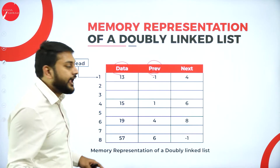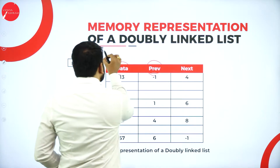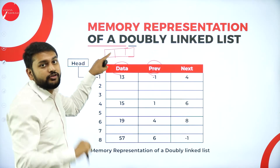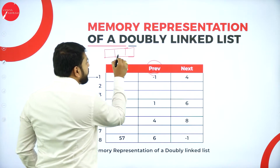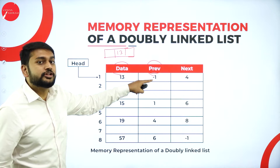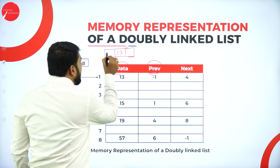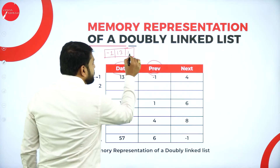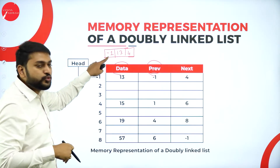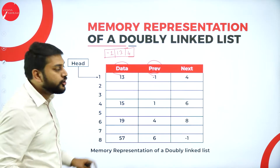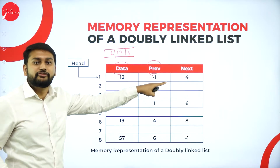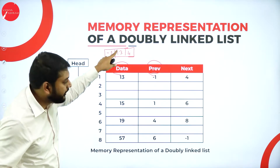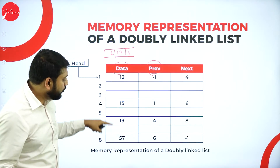In the first row, the data part has 13. This node in the doubly linked list has three parts — the middle is the data (13), the previous address is minus one (since it's the first node and has no previous node), and the next address is 4, meaning the address of the next node is 4.